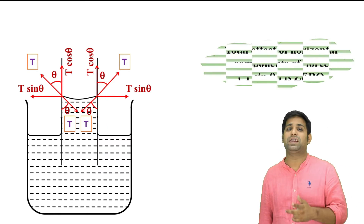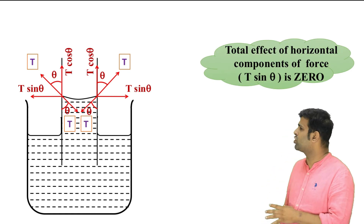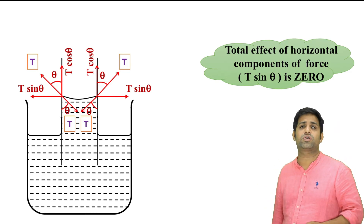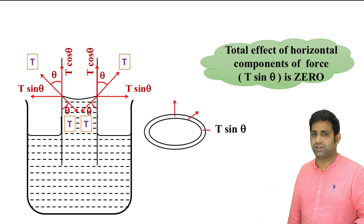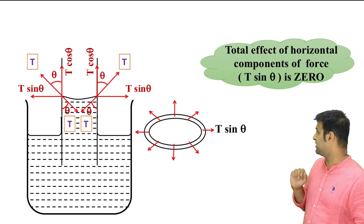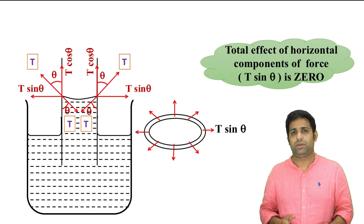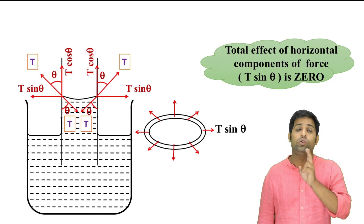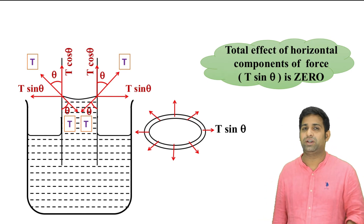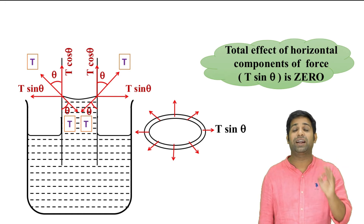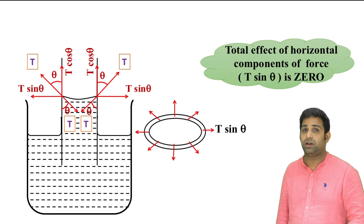We do not just have two forces — the whole circumference is in contact. So all the horizontal force components cancel, giving a net horizontal force of zero. The only remaining net force is the vertical component T cos theta, acting upward along the entire circumference.